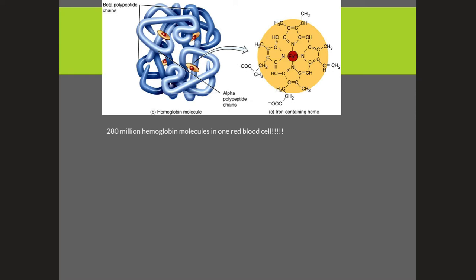However, a red blood cell never gets fully saturated, but it is set up this way so that when it does go through the lungs, it can grab as much oxygen as possible. Hemoglobin is also going to transport about 23% carbon dioxide as it passes through all the cells in the body. This carbon dioxide is brought back to the lungs and then exhaled — it is a waste product of cellular metabolism.